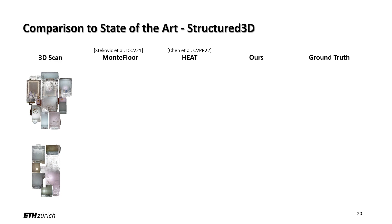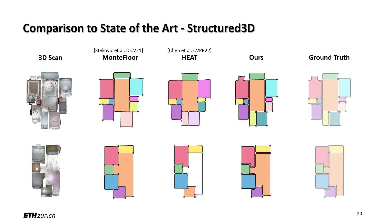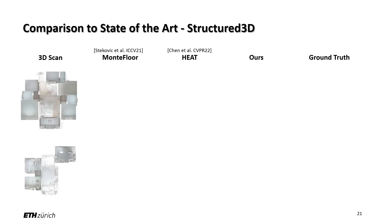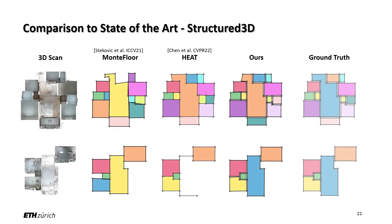We first evaluate on the Structured 3D dataset. Two state-of-the-art methods suffer from errors in the first stage. For example, missing rooms with Manhattan floor and missing corners and edges with HEAT. Instead, our holistic single-stage method produces more accurate predictions while being able to capture geometric details. Similar patterns can be found in more results.